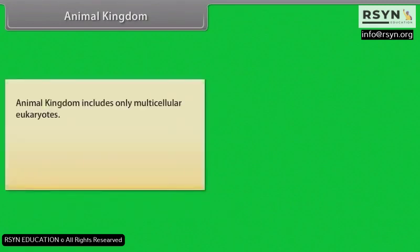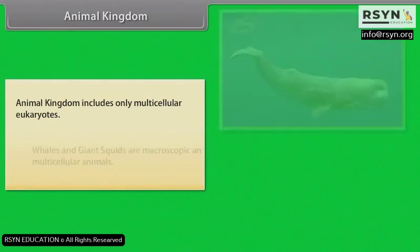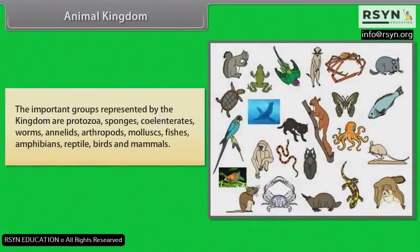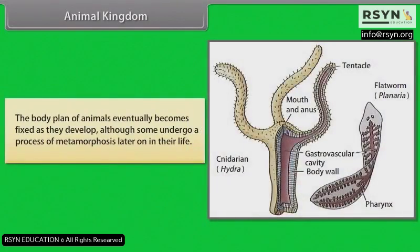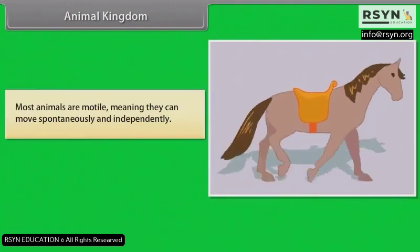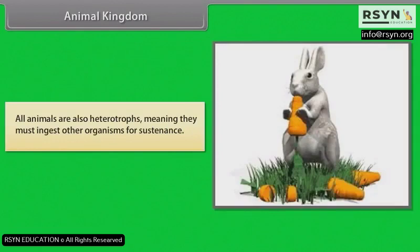Animal kingdom includes only multicellular eukaryotes. Whales and giant squids are macroscopic and multicellular animals. The important groups represented by the kingdom are protozoa, sponges, coelenterates, worms, annelids, arthropods, mollusks, fishes, amphibians, reptile, birds and mammals. The body plan of animals eventually becomes fixed as they develop, although some undergo a process of metamorphosis later on in their life. Most animals are motile, meaning they can move spontaneously and independently. All animals are also heterotrophs, meaning they must ingest other organisms for sustenance.